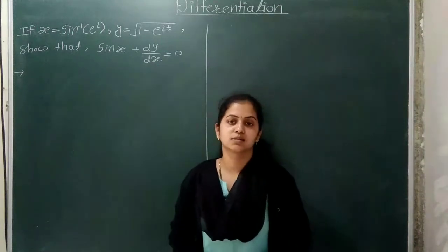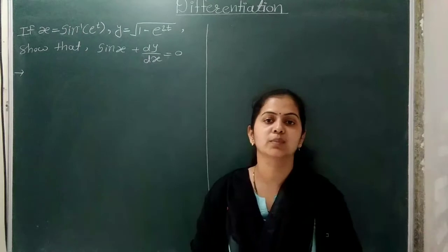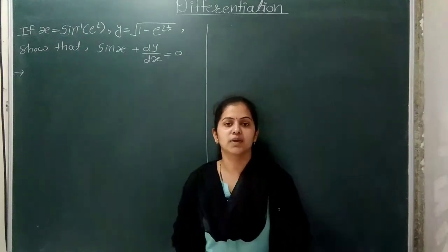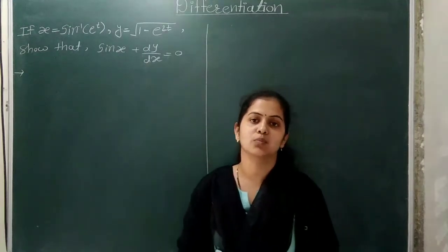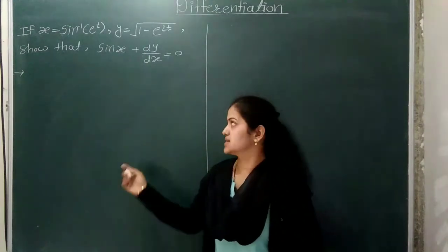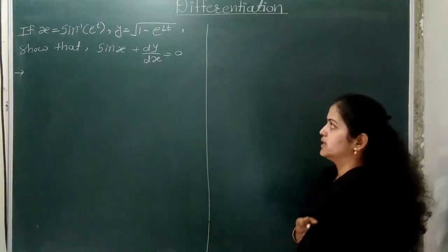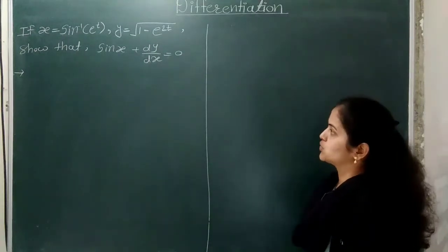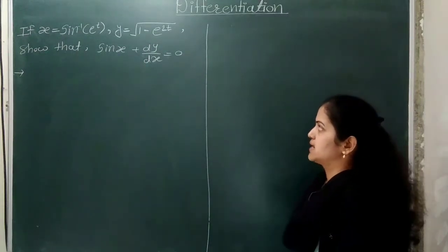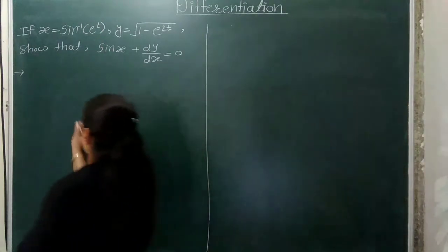Good morning students. Today we are looking at parametric function derivatives, and we will solve examples based on Exercise 1.4. The next example: if x is equal to sin inverse of e raised to t and y is equal to under root of 1 minus e raised to 2t, show that sin x plus dy/dx is equal to 0.